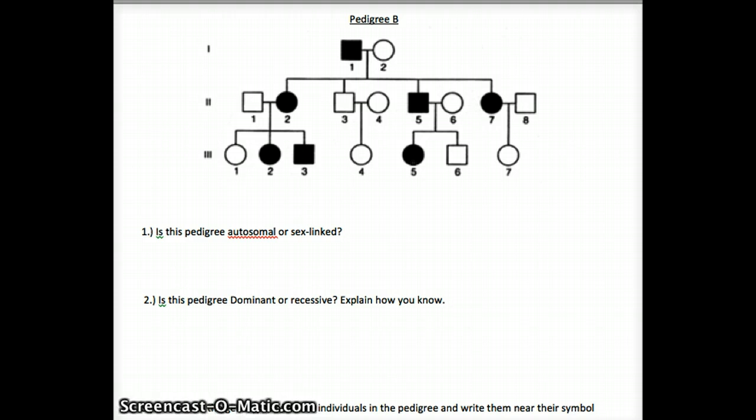We could write out the genotypes to help us do that, which asks us to do in number three. Anyone with a shaded allele has to have at least one capital letter. We don't know if they're heterozygous or homozygous, so I'm just going to write one capital letter. We know they have another one, but we don't know what that other one is. And then anyone who is not shaded is going to be homozygous recessive. I'm not going to write those out, but anyone who's not shaded needs to be homozygous recessive.